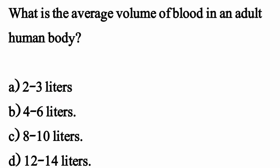What is the primary function of blood in an adult human body? The correct option is Option B.